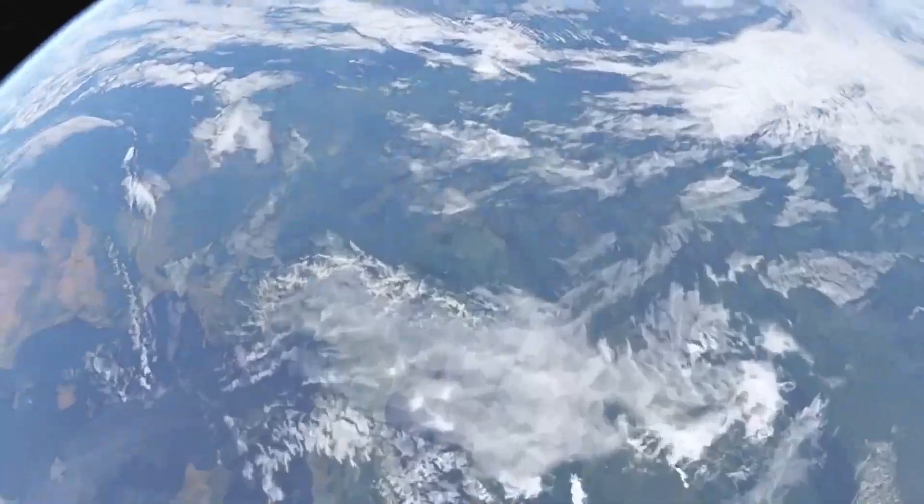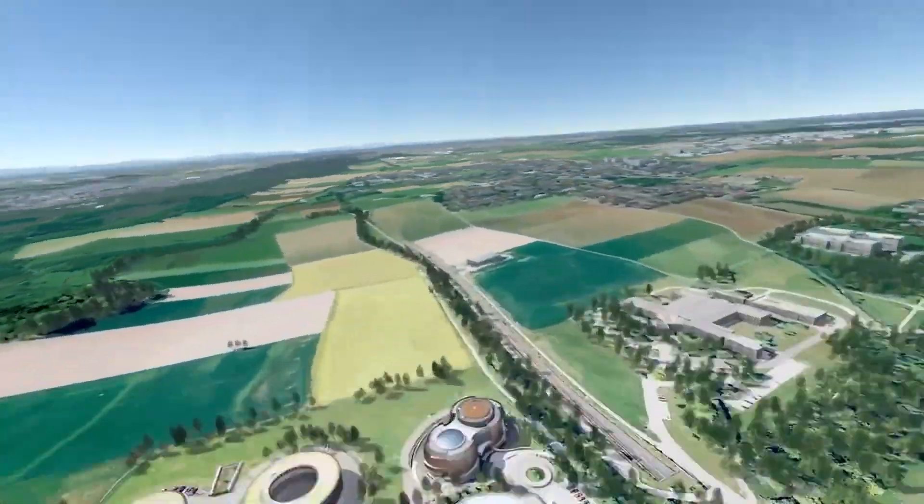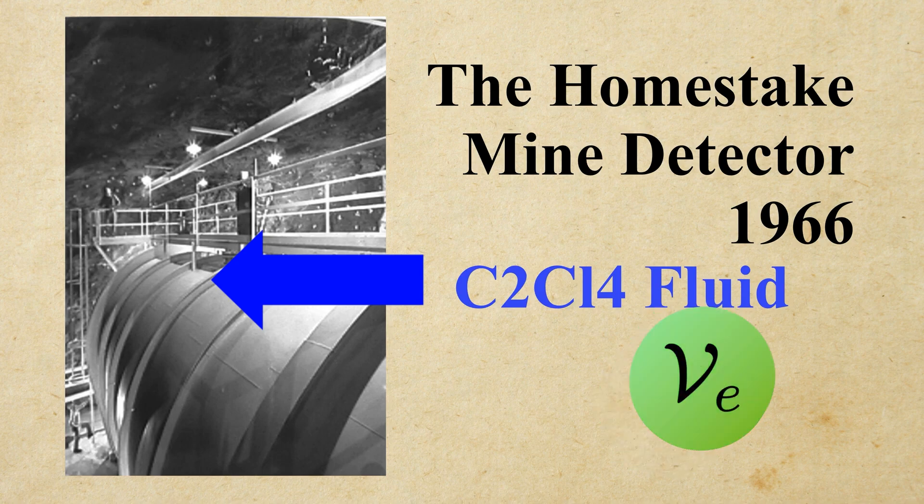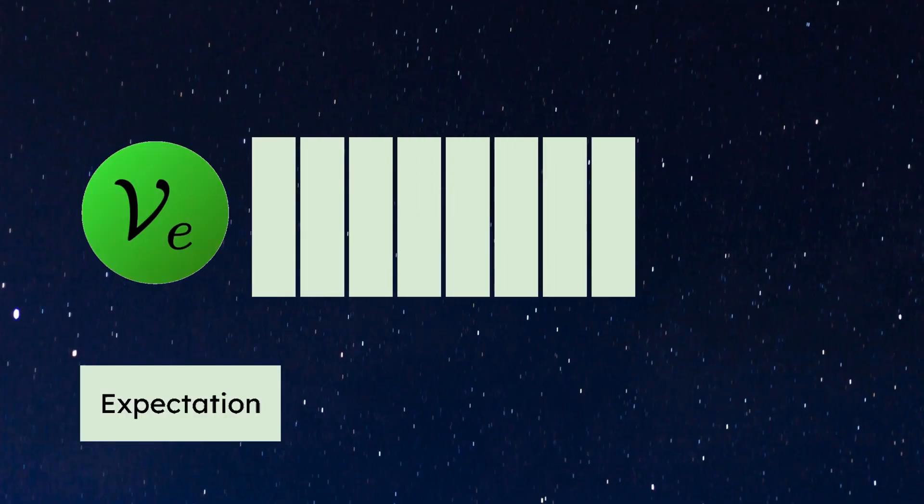However, in 1968, physicist Raymond Davis Jr. found something strange when he was trying to detect neutrinos here on Earth. He built a huge tank filled with a special fluid which reacts with high-energy electron neutrinos. However, the amount of electron neutrinos detected was only one-third of what we expected. So where did the two-thirds go?